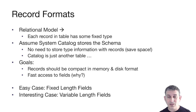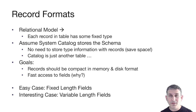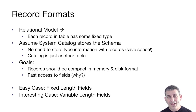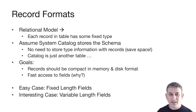Our goals for record formats are to make records compact in memory and on disk so that we have efficient I/Os — we don't do more I/Os than we need to. We also want to be able to look up individual fields quickly. In SQL we can say SELECT column FROM table, so we want quick access to any field in a row. Similar to record layouts, we'll have an easy case with fixed-length and a more interesting case with variable-length, but now at the field level, not the record level.